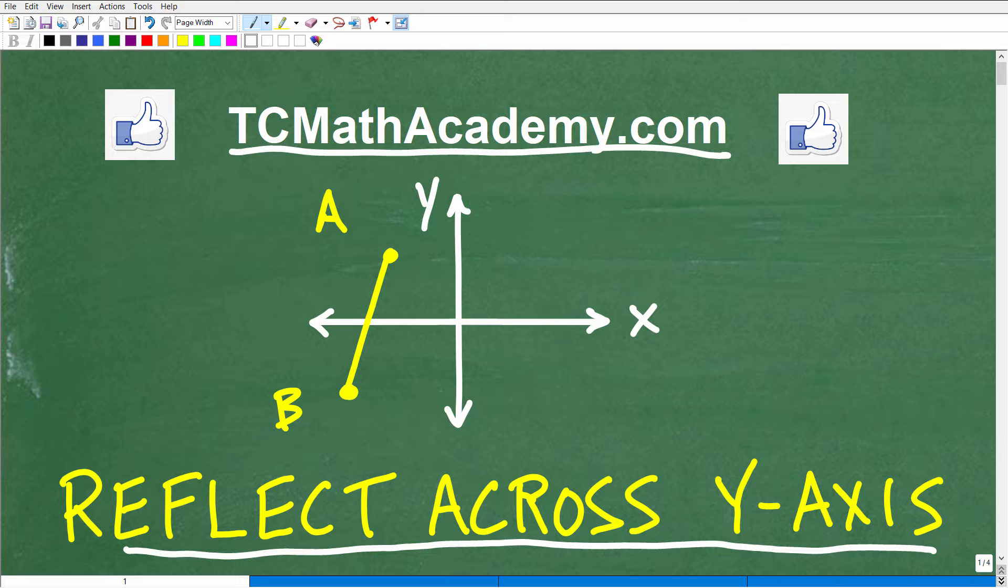So I'm not going to tell you much more than that. I'd like you to reflect this image, and of course, this image is this line segment AB. I'd like to have you reflect this across the y-axis. What would that look like? So just draw a quick sketch of this reflection, and I'm going to show you the correct answer in just one second.